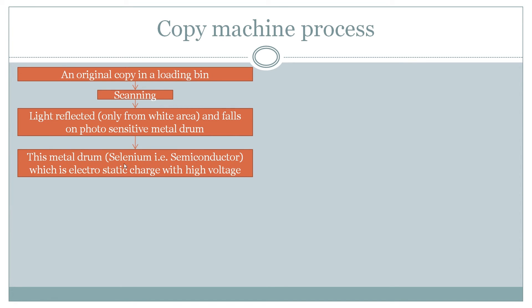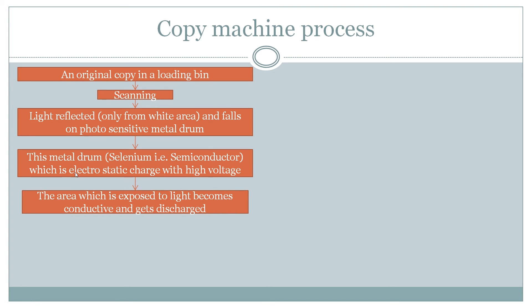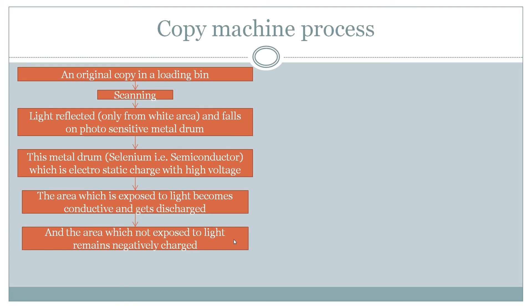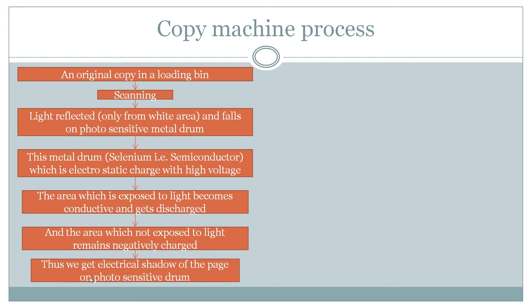The metal drum is made of a semiconductor material called selenium, which is electrostatically charged with high voltage. Whatever electrostatic charge is on the drum, wherever the light falls on that material it acts as a conductor — that is the magic of selenium — and the darker area acts as an insulator. So wherever there was a white blank portion, light reflected onto the drum and that area becomes conductive and gets discharged. The area not exposed to light — where something was written on the original document — remains negatively charged, creating an electric shadow of the page on the photosensitive drum.